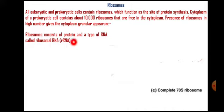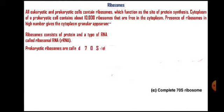Ribosomes consist of protein and one type of RNA called ribosomal RNA (rRNA), which has the specific function of binding to mRNA. Prokaryotic ribosomes are of the 70S type, where S stands for Svedberg's unit — a measure of the sedimentation coefficient, meaning the rate at which ribosomes sediment after exposure to centrifugal force. This is based on their molecular weight and molecular size.